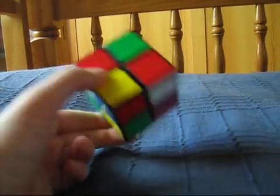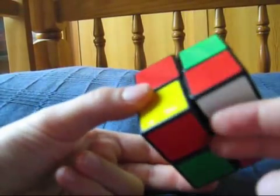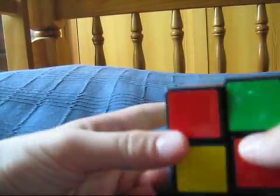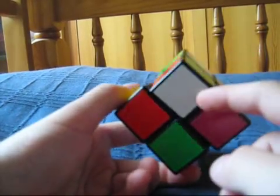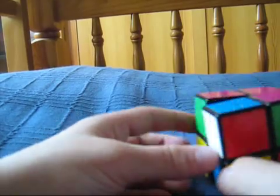Now in the first step in solving the 2x2, we're going to solve the first side and the first layer. We're going to start with the white side. Now we're going to take any piece that goes on either side of this one.